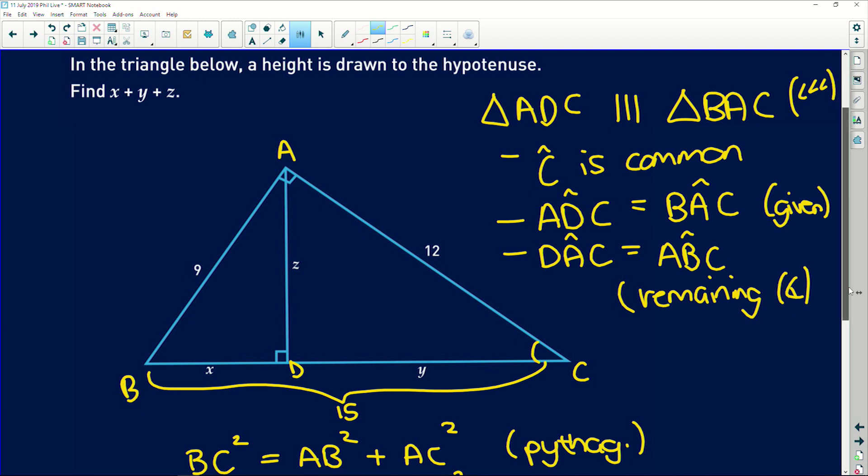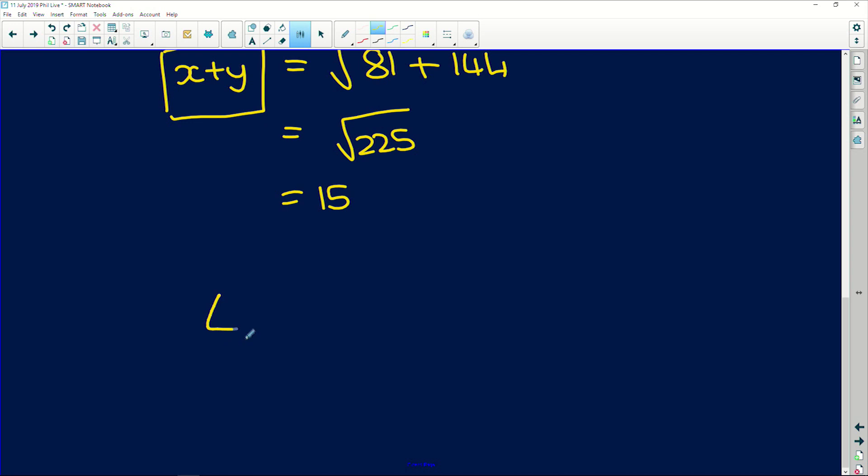So that means that they're similar because of angle, angle, angle. So now ADC and BAC. Triangle ADC is similar to triangle BAC.